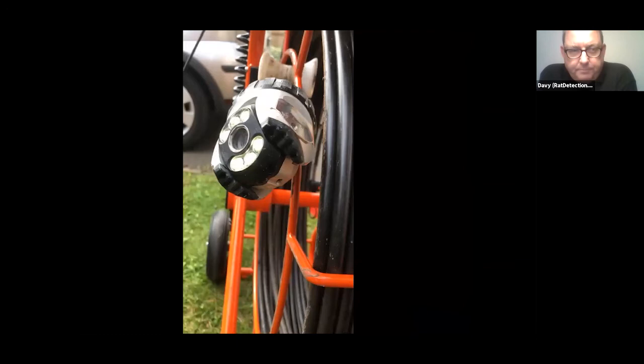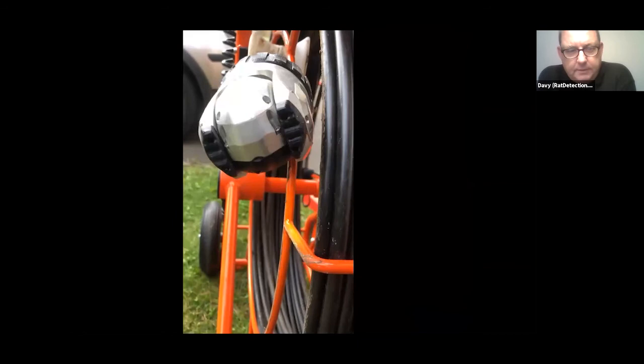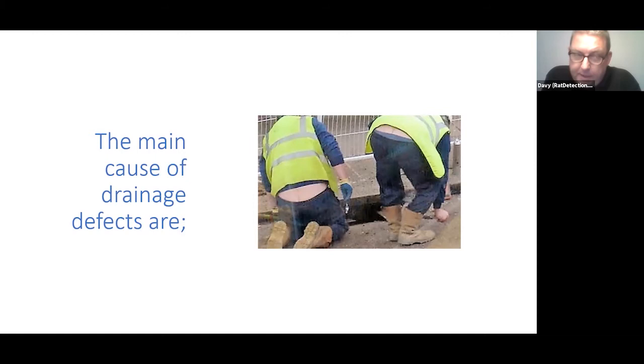This is a pan-and-tilt camera. A lot of contractors don't use them because they're not cheap - very expensive. As I say on the training course, that camera cost me more than my first flat. But the main cause of rats, the main cause of drainage defects that allow rats into properties, is builders - ground workers, people building extensions, people messing around with drainage systems.